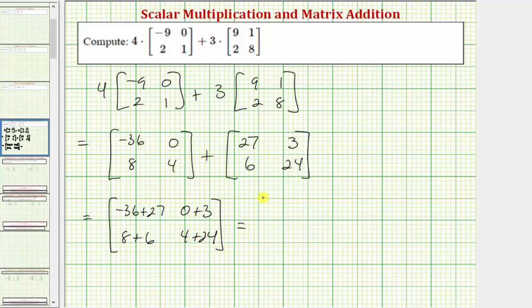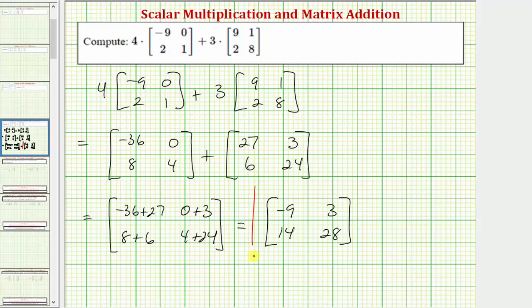So simplifying: negative 36 plus 27 is negative nine. Zero plus three is three. Eight plus six is 14. And four plus 24 equals 28. So this two by two matrix is the result of performing these matrix operations. I hope you found this helpful.